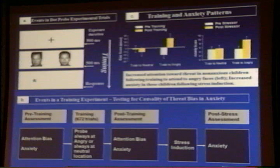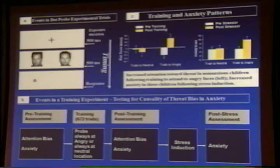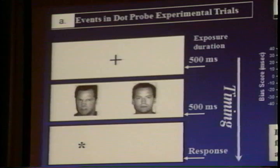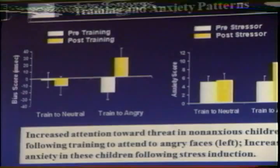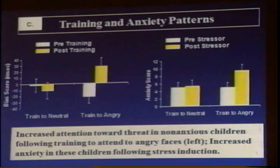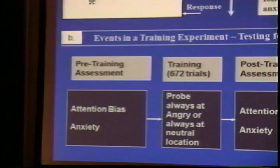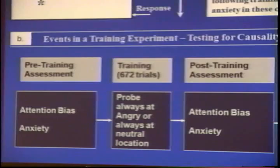Going back to Colin MacLeod, who is a very clever cognitive scientist from Australia, who developed the dot probe task. As I mentioned in some of his earlier studies, he showed that anxious individuals show this attention bias to threat. But what MacLeod wanted to know is whether or not there was a causal link between this attention bias to threat and anxious behavior, or anxiety disorders — but let's just leave it at anxious behavior.